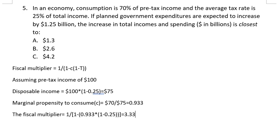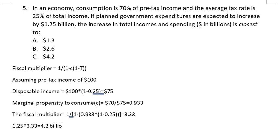With government expenditure of $1.25 billion, total income and spending will rise by 1.25 times 3.33 equals $4.2 billion. The answer is C.